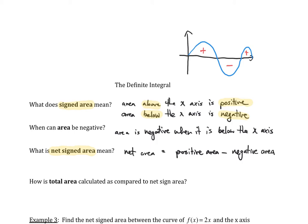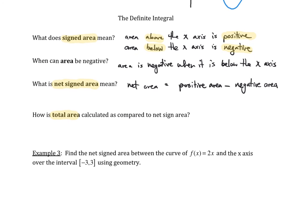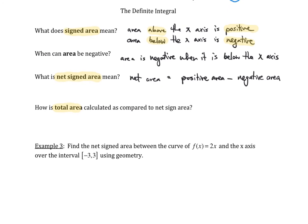What about the total area? How is the total area calculated as compared to the net signed area? Let's take a look at how each of these things are calculated. The net signed area is just the integral from a to b of f(x) dx. This definite integral automatically calculates the net signed area.